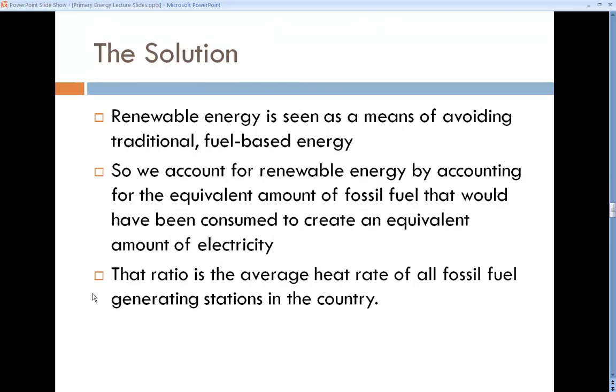This is the solution. We look at this as avoiding traditional fuel-based energy. We account for renewable energy by figuring out how much fossil fuel we would have used to make that number of kilowatt-hours. That answer is the average heat rate of all fossil fuel generating stations in the country. The heat rate is BTUs per kilowatt-hours. Every power plant has to report that to the government and they average it out. That average heat rate is then applied to the kilowatt-hours generated by wind and solar, and they back-calculate the quads of fossil fuels that would have been used otherwise.